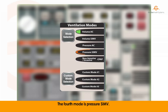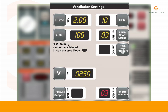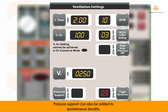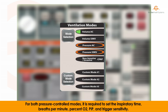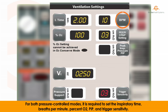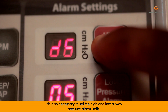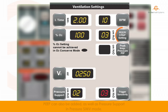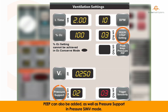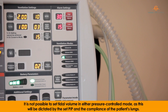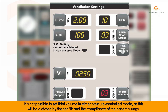The fourth mode is pressure SIMV. The ventilator will deliver breaths to the set PEEP at the set BPM. Any further spontaneous breaths will be to the peak inspiratory pressure dictated by the patient. Pressure support can also be added to spontaneous breaths. For both pressure controlled modes, it is required to set the inspiratory time, breaths per minute, FiO2, PEEP, trigger sensitivity, and high and low airway pressure alarm limits. PEEP can also be added, as well as pressure support in pressure SIMV mode. It is not possible to set tidal volume in either pressure controlled mode, as this will be dictated by the set PEEP and the compliance of the patient's lungs.